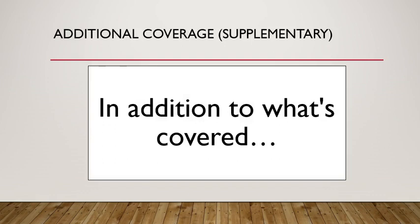The additional coverages section of a policy will indicate what's covered in addition to what's in the insuring agreement. It's kind of like buying a book at the bookstore and you get a free bookmark for your purchase, or paying for a pedicure and in addition you also get a foot rub. For example, the insuring agreement of a homeowner's policy will include the perils that are covered, but under the additional coverages section, damage to trees, shrubs, and plants would be covered as long as it's related to a covered peril such as fire.